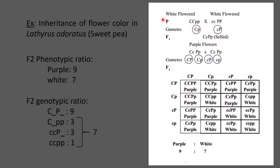But when they crossed two different white-flowered plants, the F1 generation had all purple-flowered plants. When these purple F1 plants were self-crossed, the F2 generation produced two phenotypes — purple and white — in a 9:7 ratio. This 9:7 ratio is a variation of the normal dihybrid F2 ratio of 9:3:3:1, modified to 9:7. Bateson and Punnett explained this as the involvement of two different non-allelic genes governing a single character.